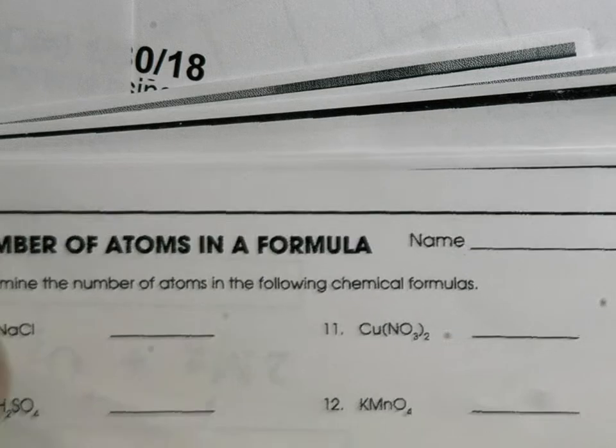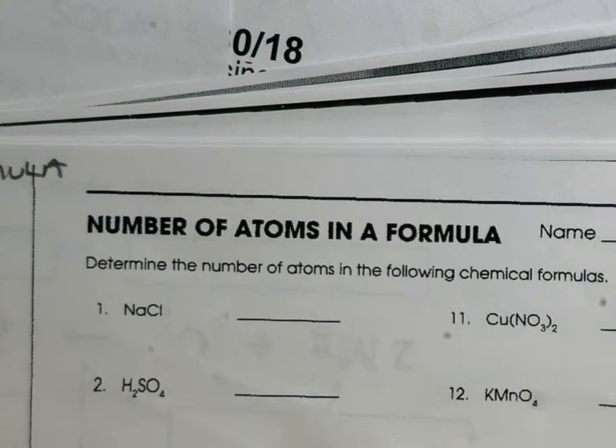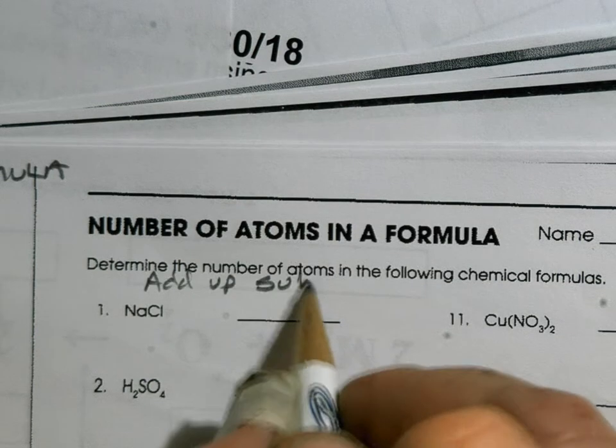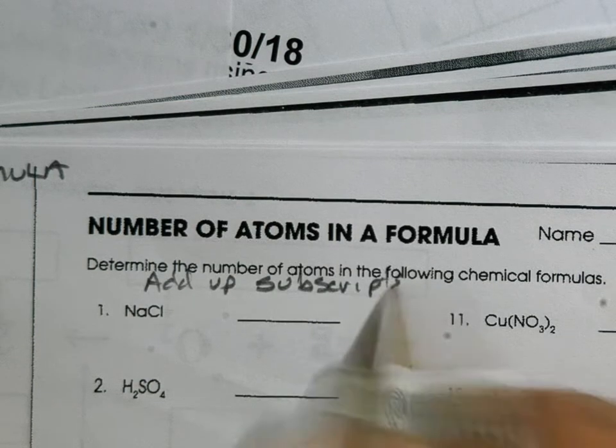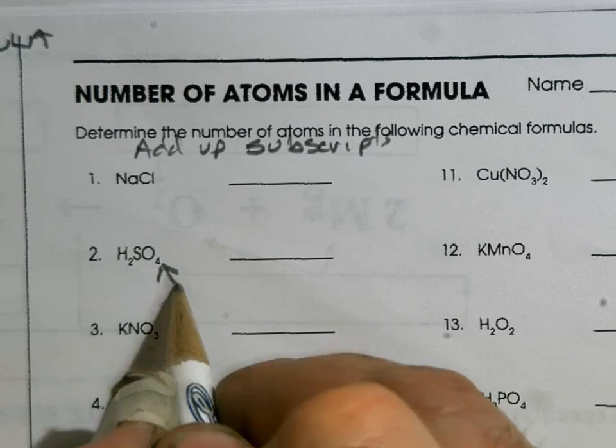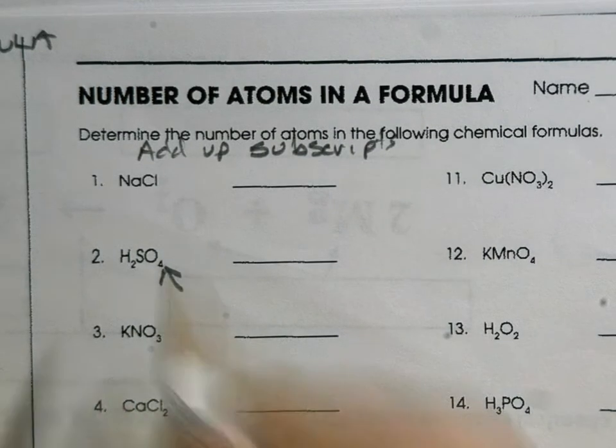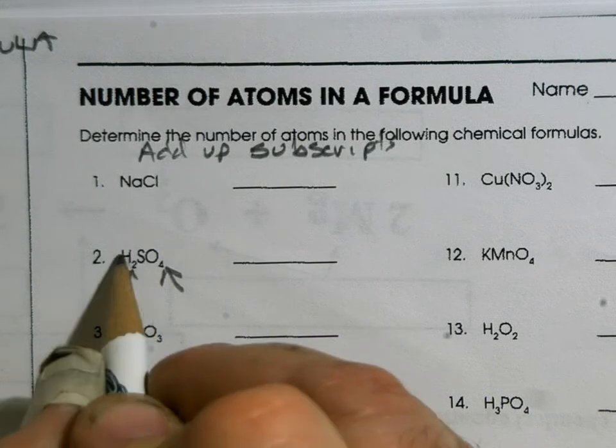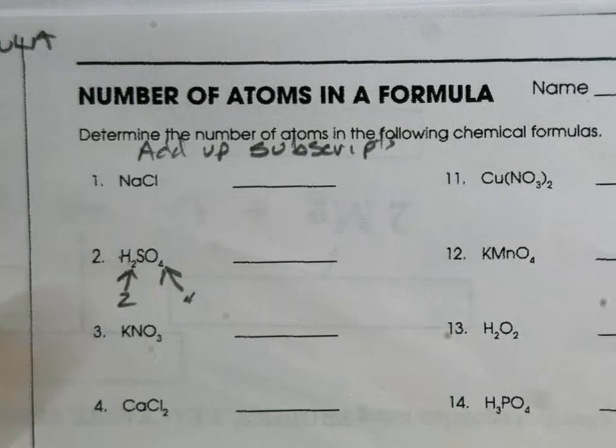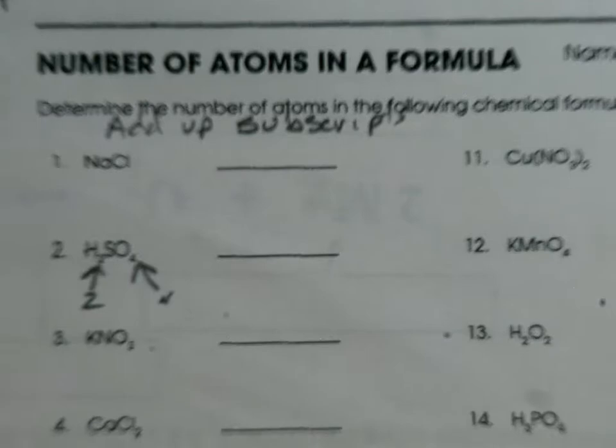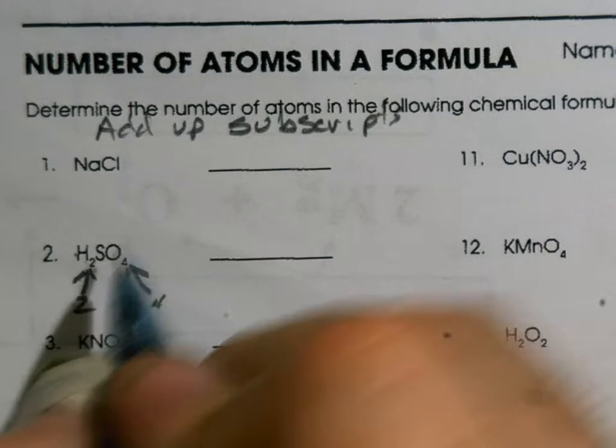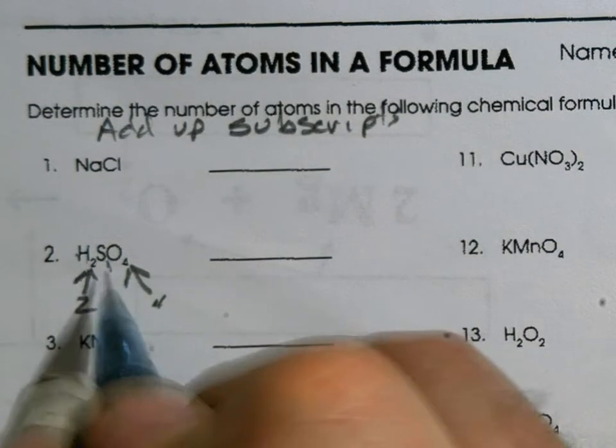Now coming across over here: number of atoms in a formula. What you got to do is add up the subscripts. That's a subscript right there - it's telling you there's four oxygens. Right there it's telling you that there's two hydrogens. It's always after the letter in front of it. Now sulfur here, there's only one of them, so there's no subscript listed there. That means there's an invisible one right there, so if it helps you to put a one, go for it.